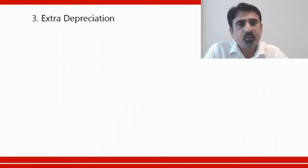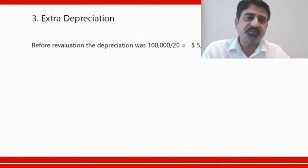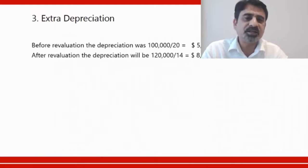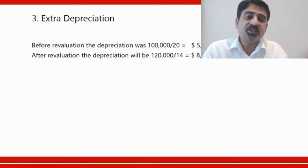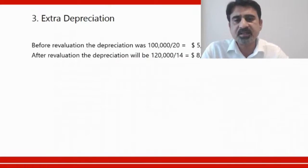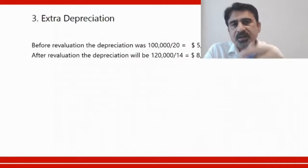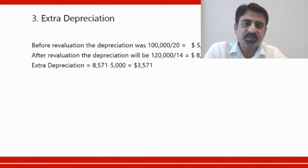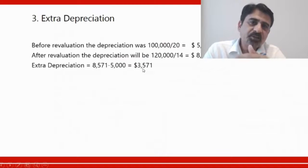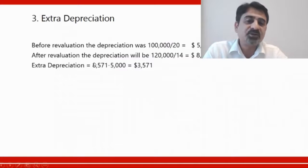Requirement three — extra depreciation. Initially the asset was $100,000 and depreciation was $5,000 per year. After revaluation the asset value is $120,000. Out of 20 years, six have passed, so 14 years remain. New annual depreciation is $120,000 ÷ 14 = $8,571. The extra depreciation compared to before is $8,571 minus $5,000 = $3,571 per year.